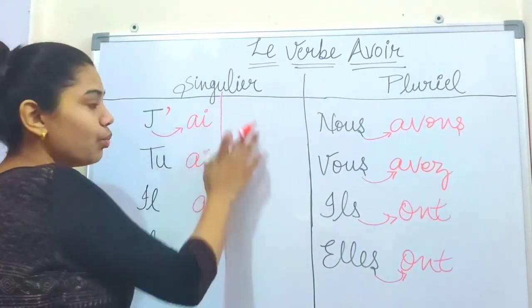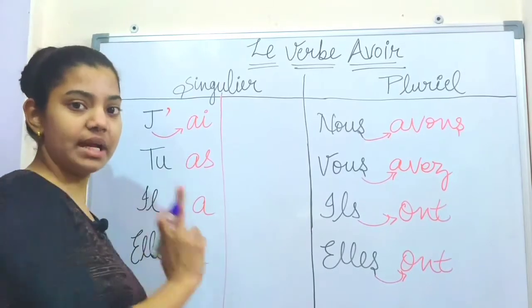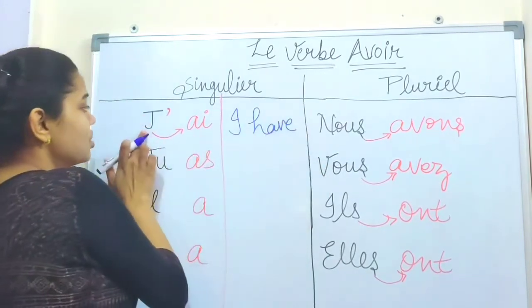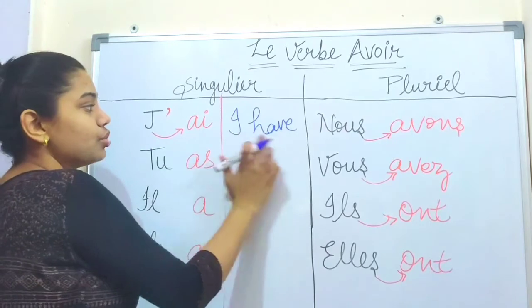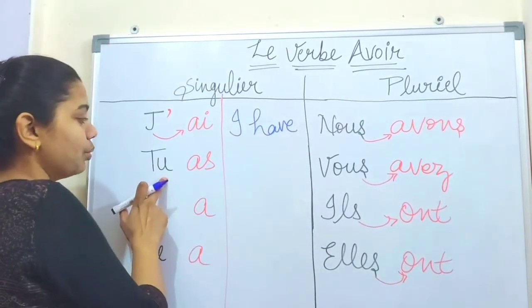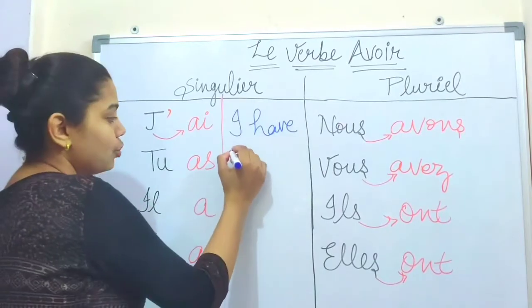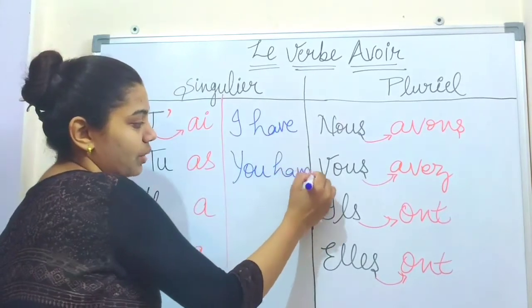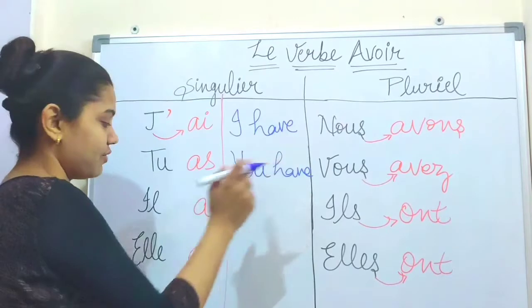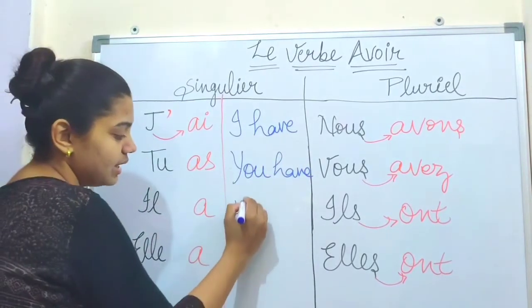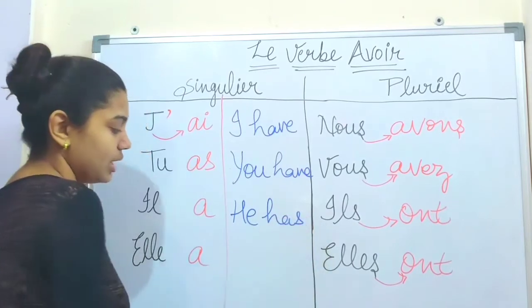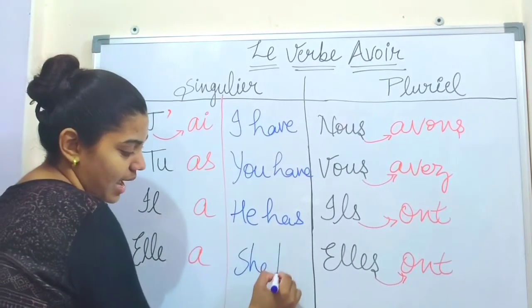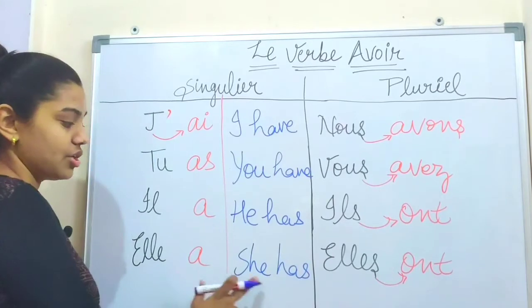Let's go through the meanings. J'ai means 'I have.' Tu as means 'you have' — used informally. Il a means 'he has.' Elle a means 'she has.'